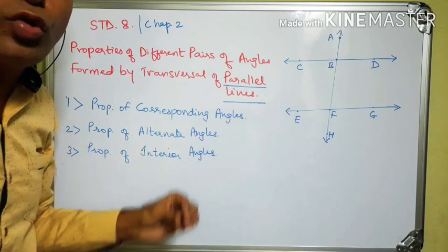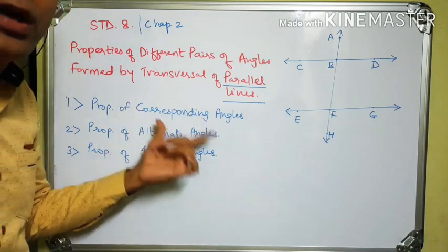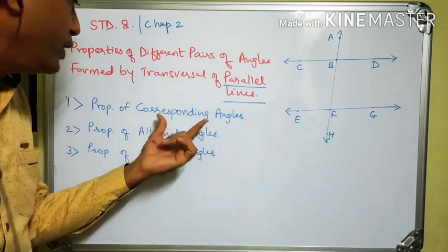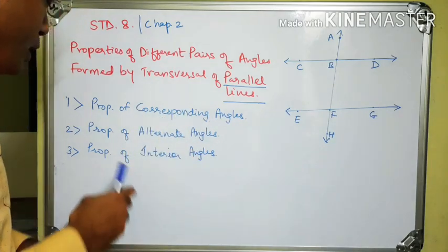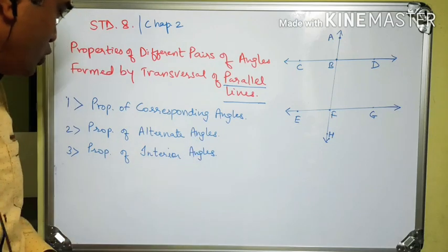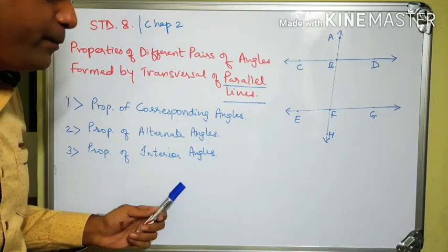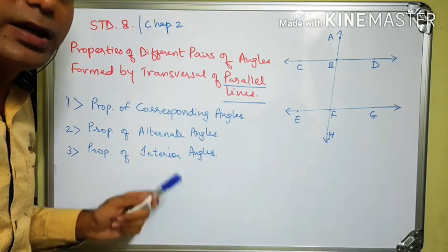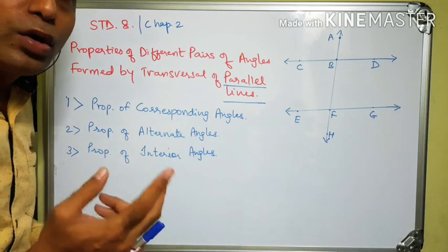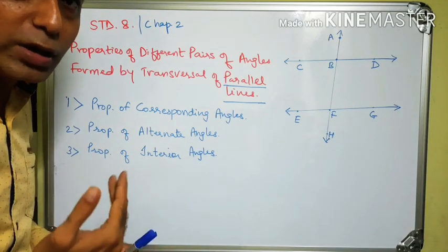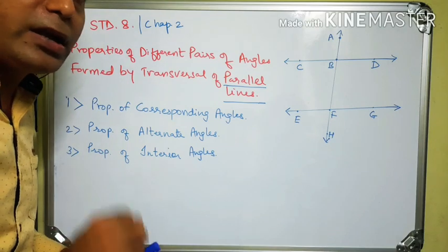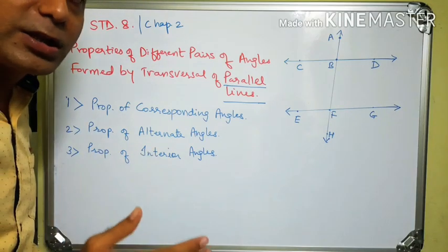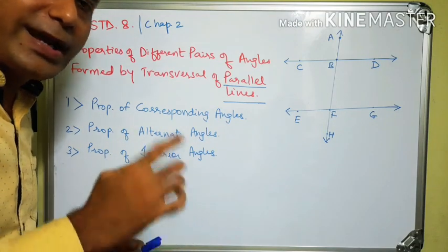To repeat the first property: each pair of corresponding angles formed by two parallel lines and their transversal is congruent. The second property is the property of alternate angles. Each pair of alternate angles formed by two parallel lines and their transversal is congruent. There are two types of alternate angles: interior alternate angles and exterior alternate angles.